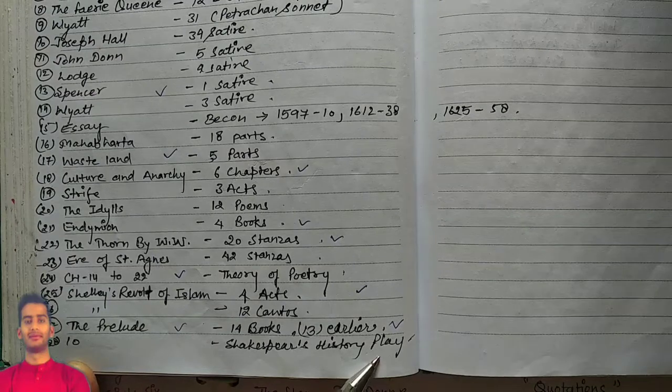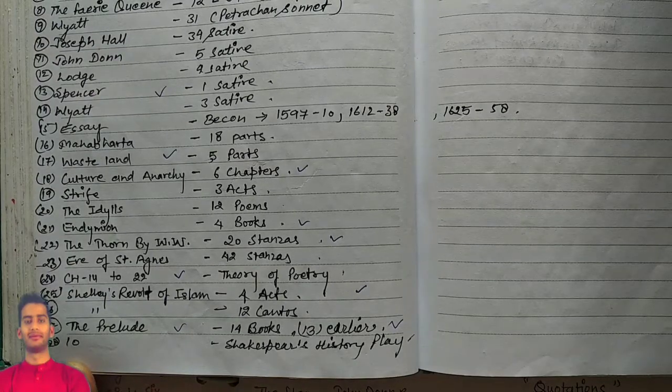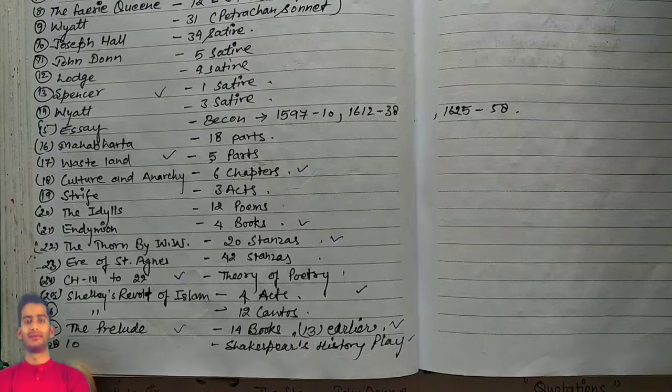Shakespeare's history plays are a number 10, means there are 10 history plays he has written.